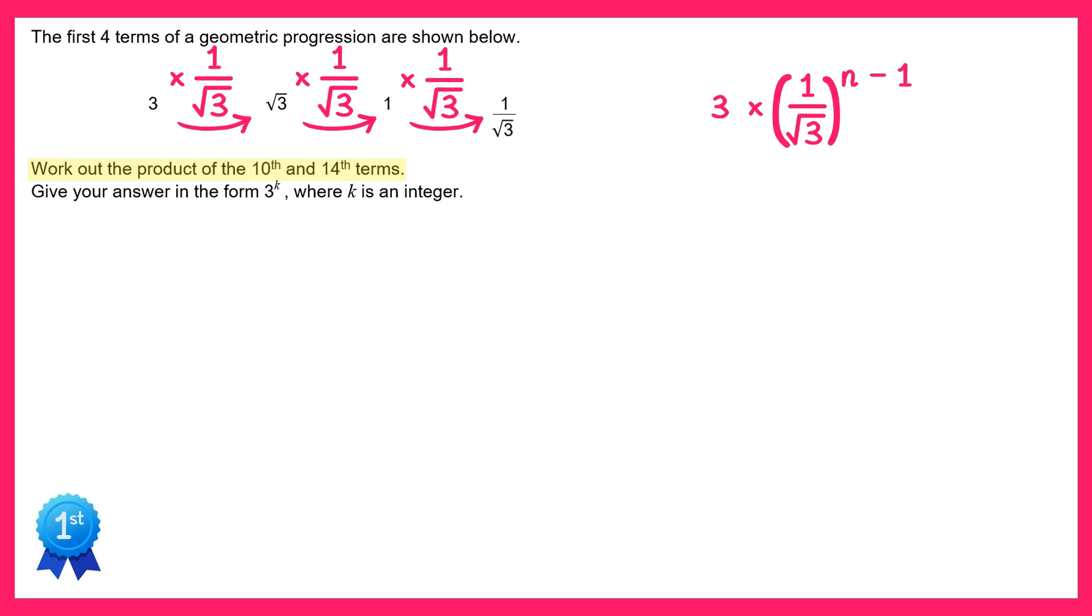Now we can use this formula to work out the 10th and 14th terms. So let's start with the 10th term. It would be 3 times 1 over root 3 to the power 10 minus 1. And obviously 10 minus 1 is 9. Using our indices rules this is the same as 3 times 1 to the 9 over square root 3 to the 9. 1 to the 9 is obviously just 1 so we don't need to write that power 9 there. And then for the numerators we'd multiply 3 and 1 to get 3. So it's 3 over square root 3 to the power 9.